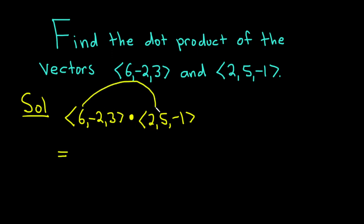So we have 6 times 2. We have 6 parentheses 2, plus, and then negative 2 times 5. So parentheses negative 2, parentheses 5, and plus 3 times negative 1. So 3 and then a parentheses negative 1.